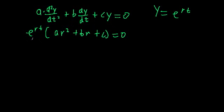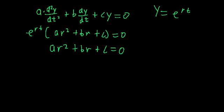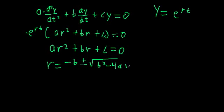Since the exponential function can never equal zero, we recover our characteristic equation: a·r² plus b·r plus c equals zero. The roots of this equation give us the exponents of our solutions. We can find the roots of this second-order characteristic equation using the quadratic formula: r equals negative b plus or minus the square root of b² minus 4ac, all over 2a.